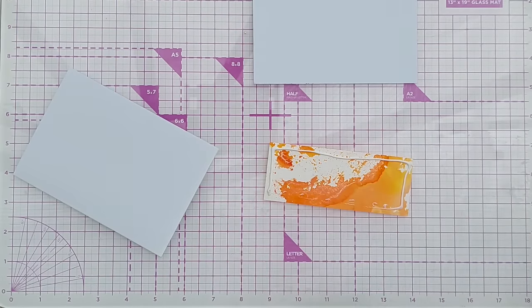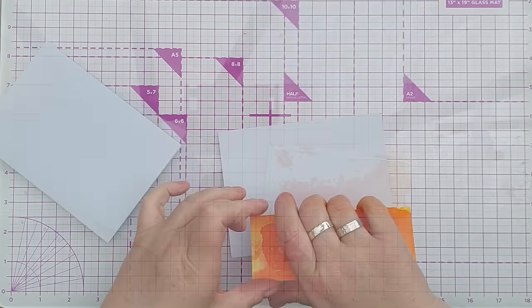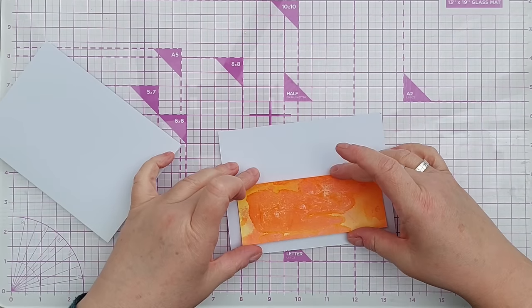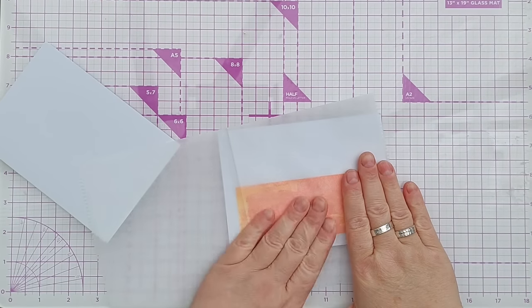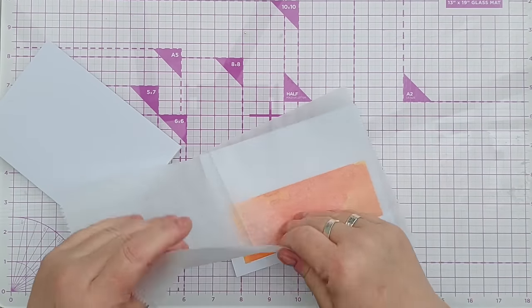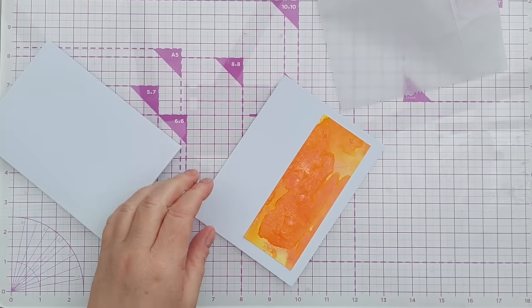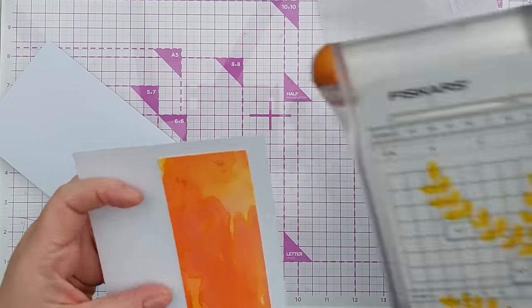But before I stick the panel down onto my card blank I wanted to give it a little bit of a border to make it look a little bit more finished so I stuck it on some white cardstock and then trimmed it down so there's a little white border around the outside.